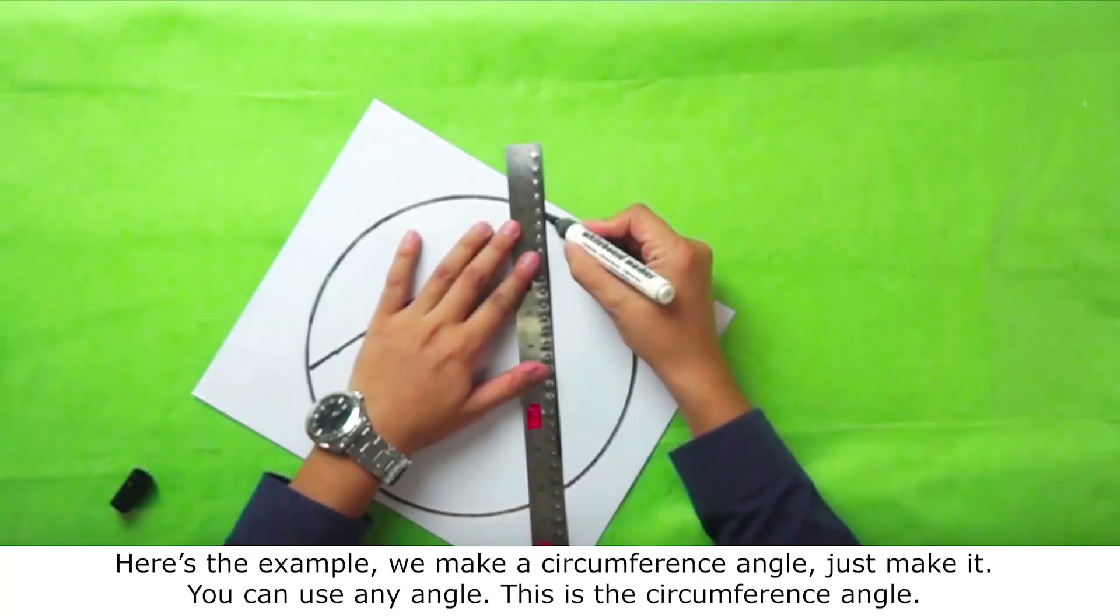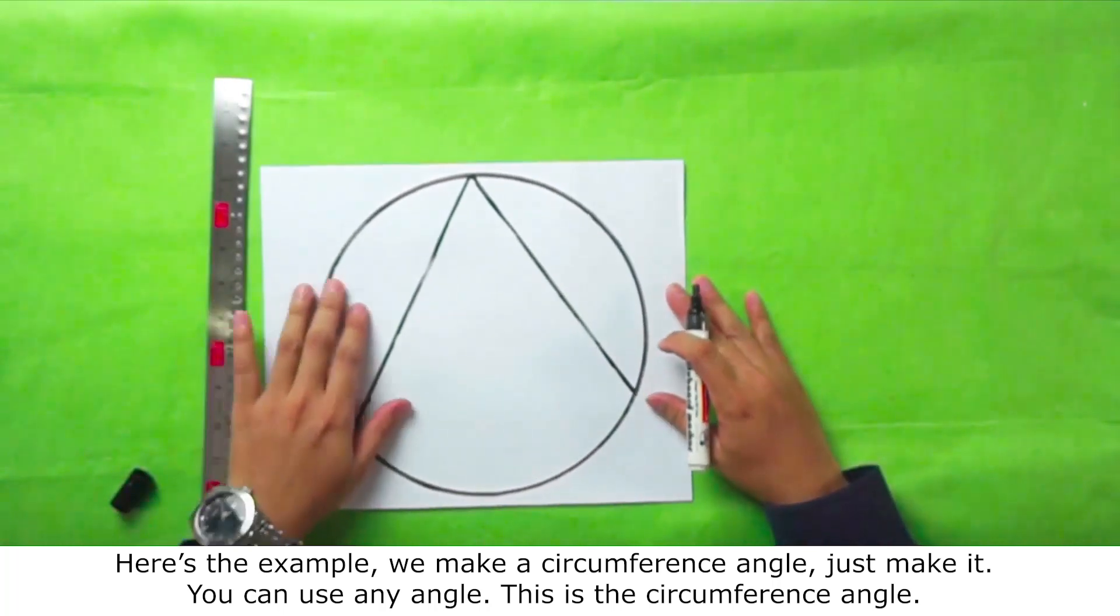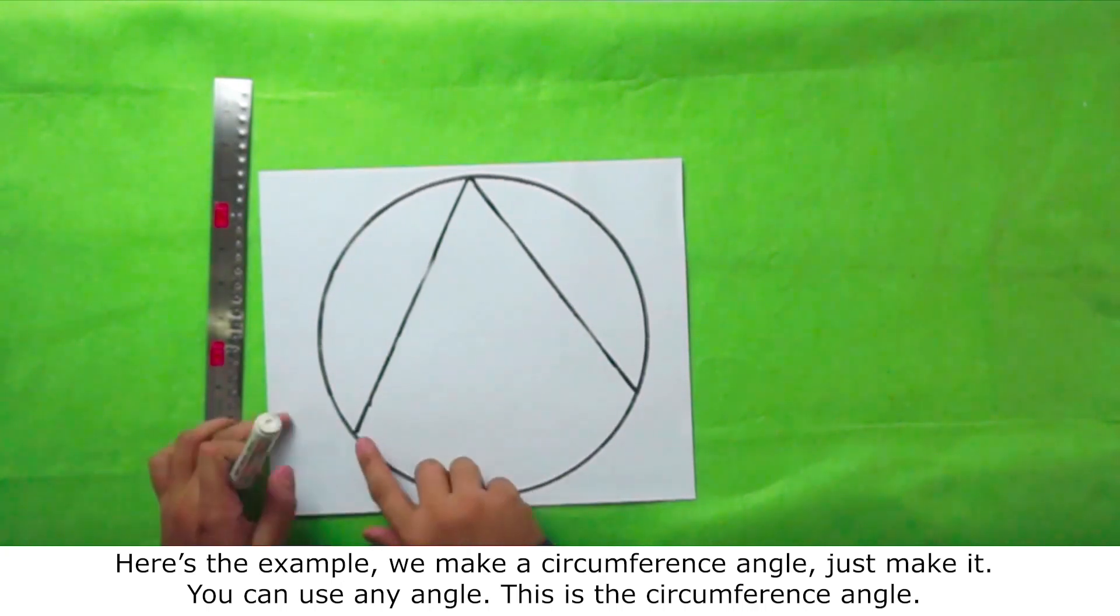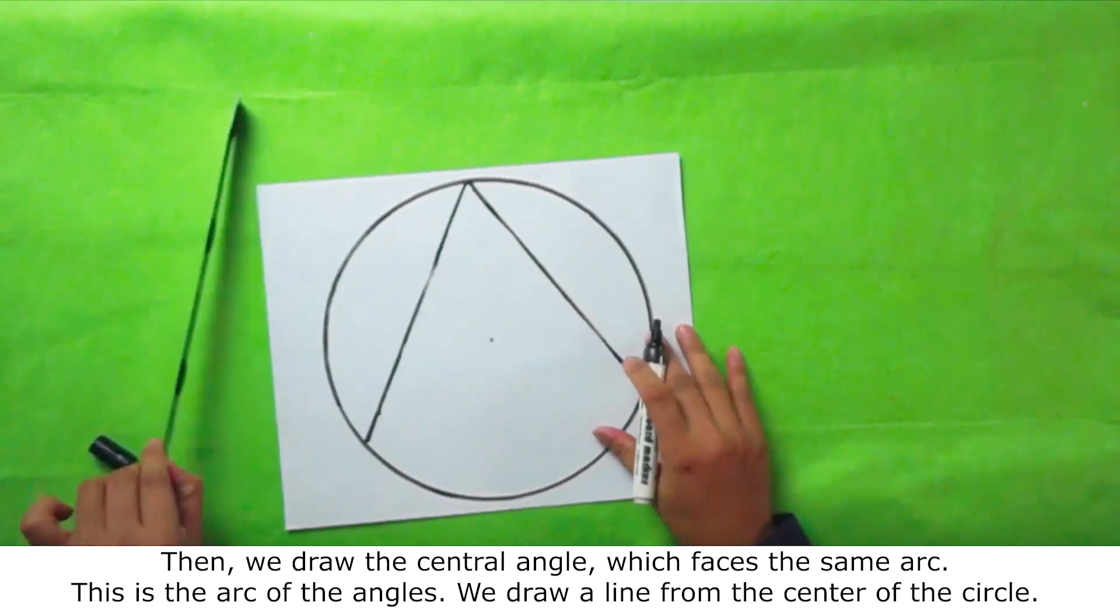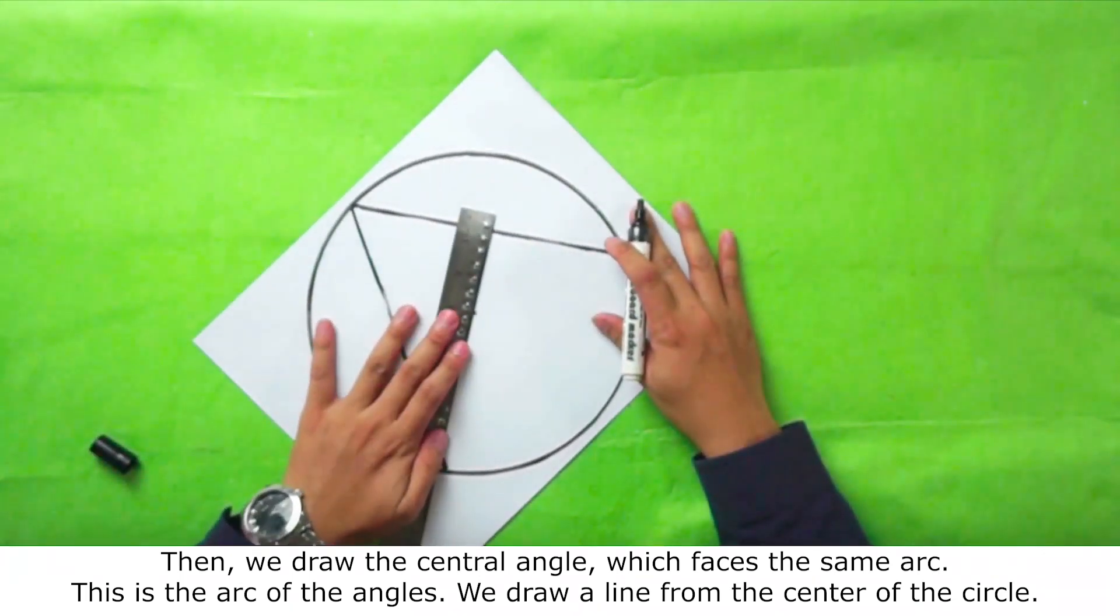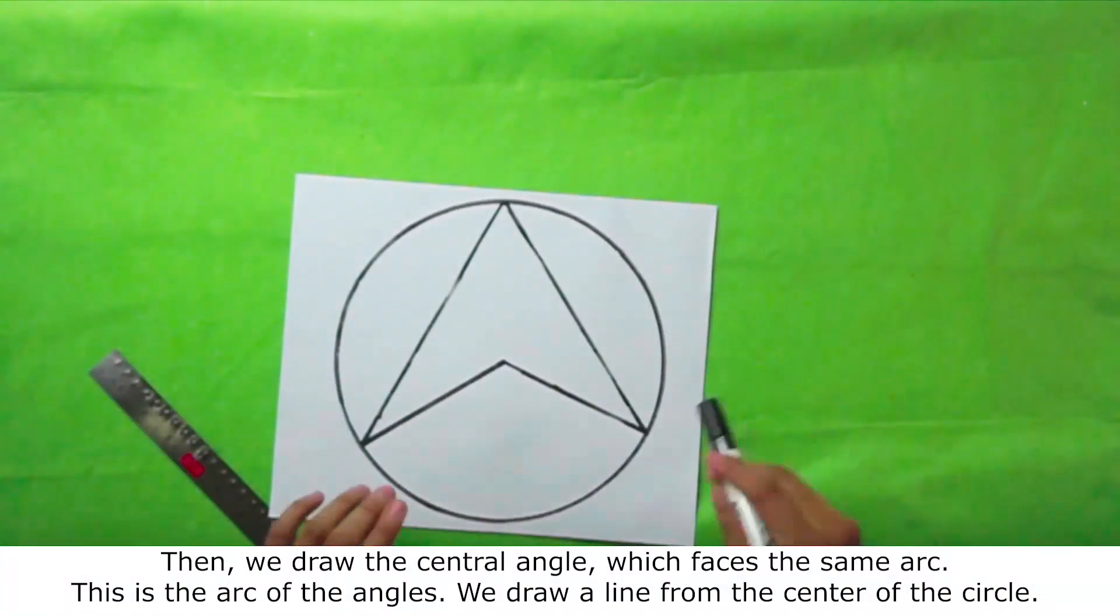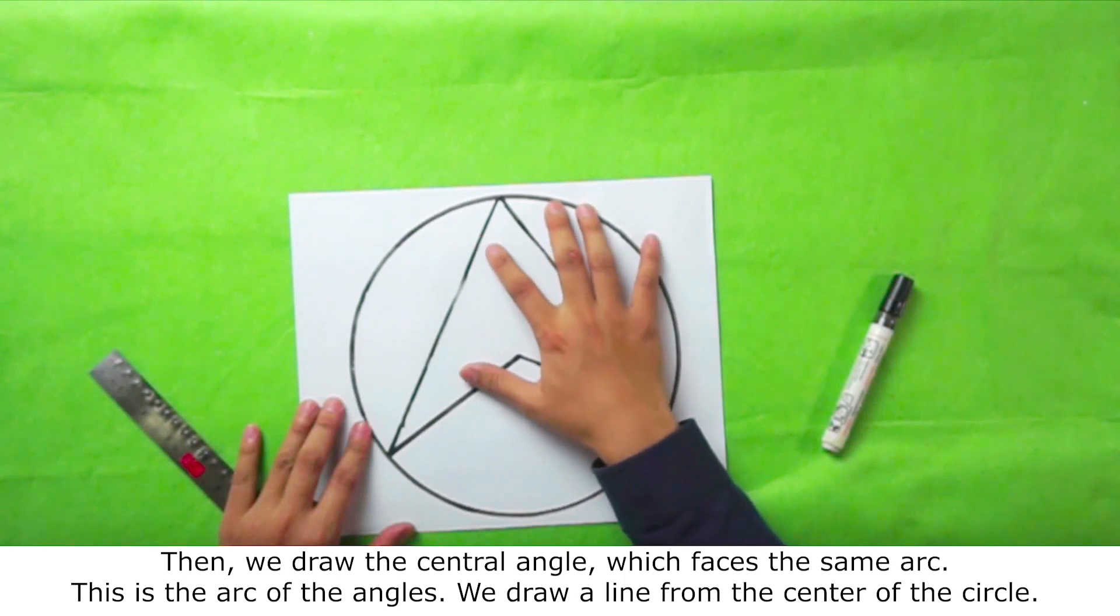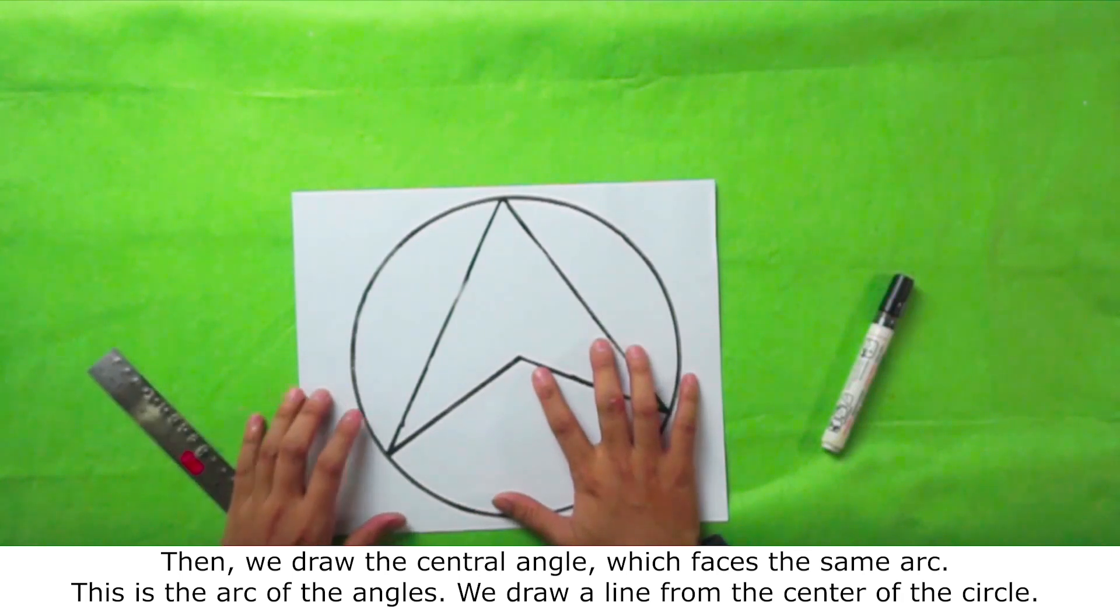We make a circumference angle. You can use any angle. This is the circumference angle. Then we draw the central angle, which faces the same arc. This is the arc of the angles. We draw a line from the center of the circle.